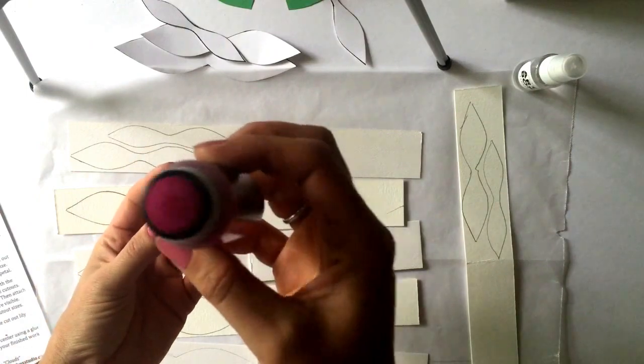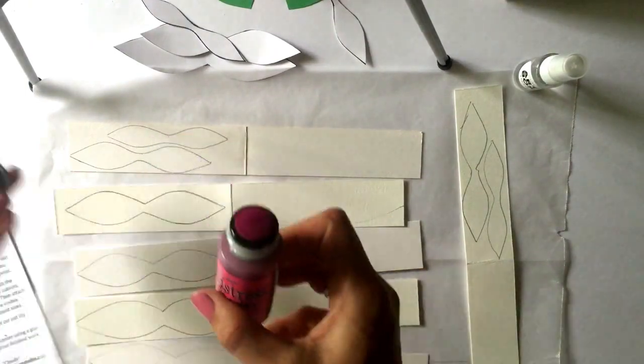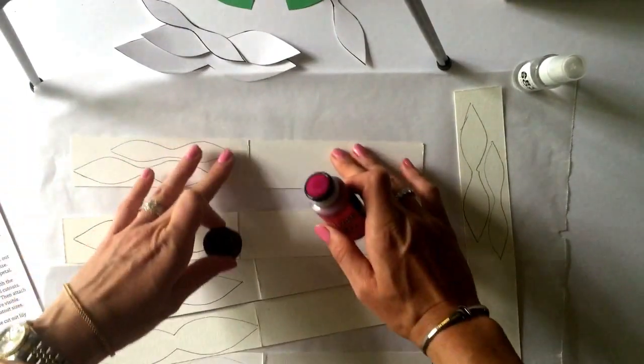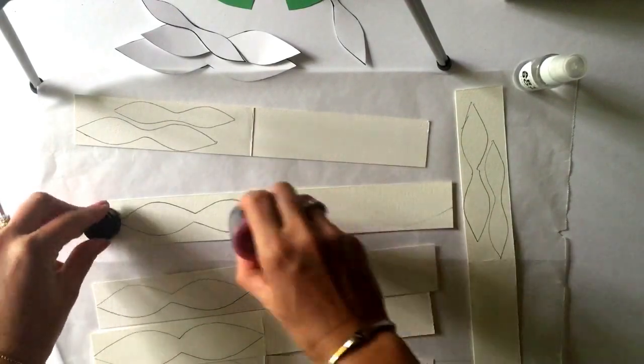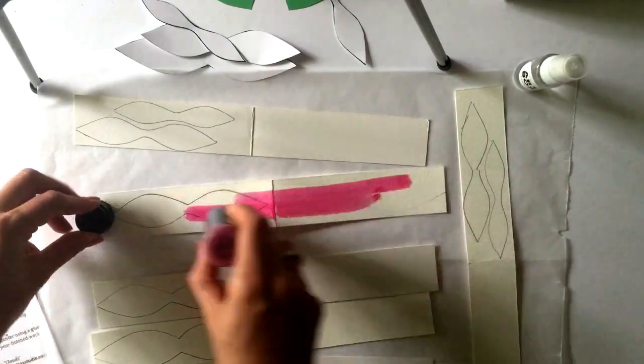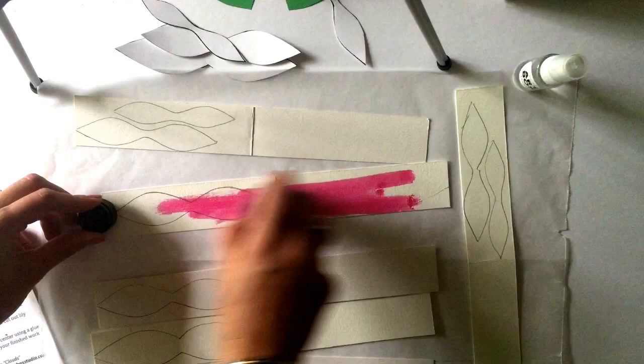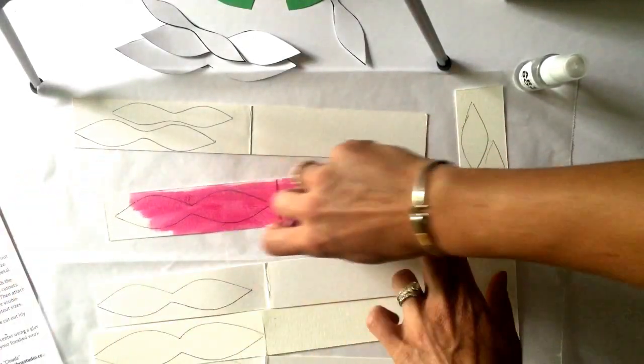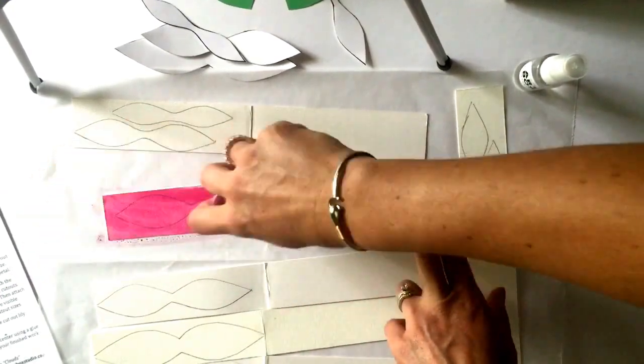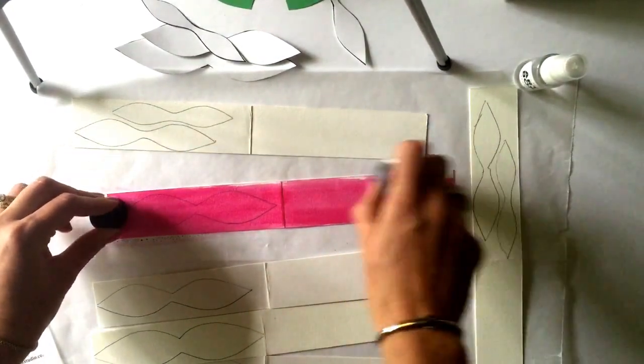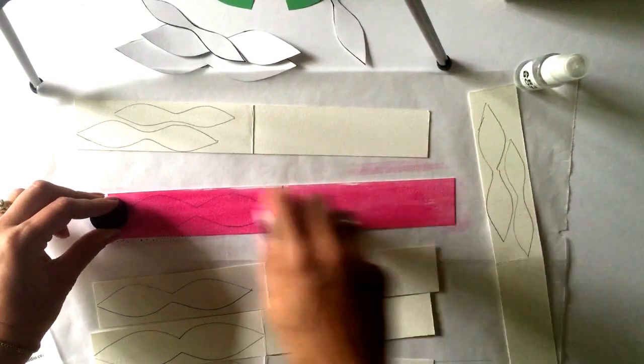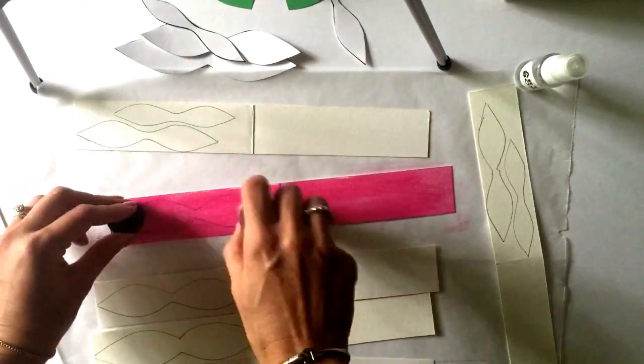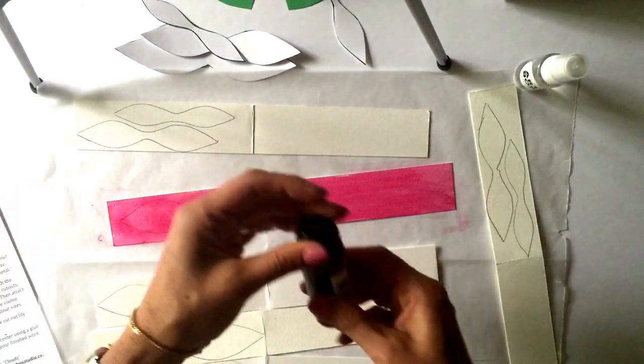Step 3B. Using the Tim Holtz Distress Stain, you're going to apply the stain, also known as the ink, to the watercolor paper strips. Once the ink is applied, lightly mist the strips with water. Flip your watercolor paper over and repeat this step. You will do all of the paper strips this way.